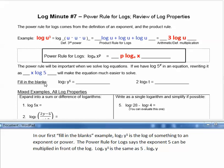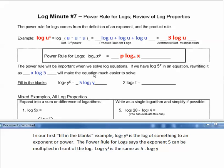In our first fill-in-the-blanks example, the log base 2 of y to the fifth is the log of something to an exponent or power. So the power rule for logs says that the exponent 5 can be multiplied in front of the log. Log base 2 of y to the fifth is the same as 5 times log base 2 of y.